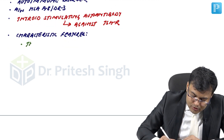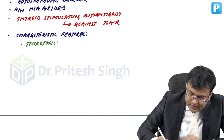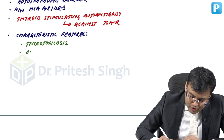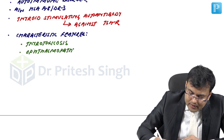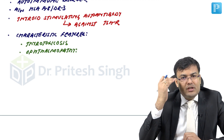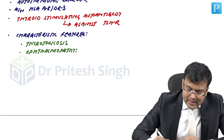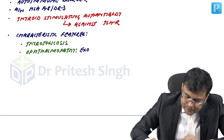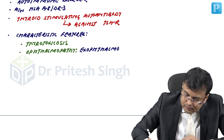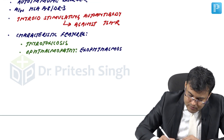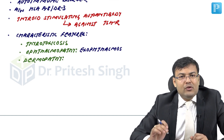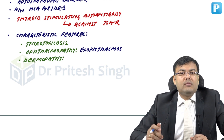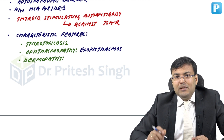The characteristic features of Graves' disease include: Thyrotoxicosis, Ophthalmopathy — which is collection of loose areolar tissue behind the eyeball, also known as Exophthalmos — and Dermopathy, which involves deposition of glycosaminoglycans over the shin of the tibia and dorsum of the foot, known as Pretibial Myxedema.